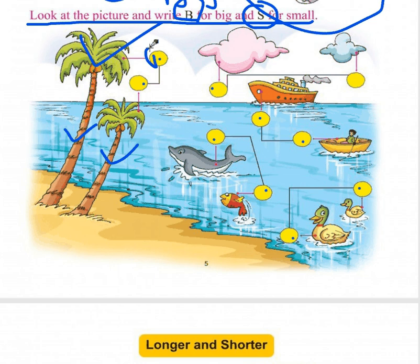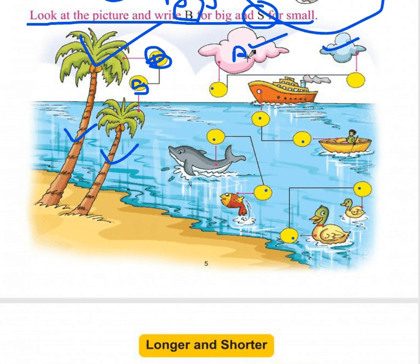Next we have clouds — which one is big? This one, so we write B here, and here we write S for small. Ab next hamaare paas boats hain — yeh bada boat aur yeh chota boat. So this one is big so we write B, and this one is small so we write S.